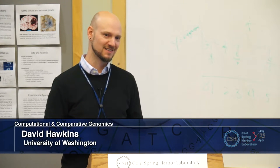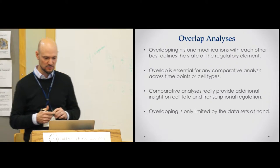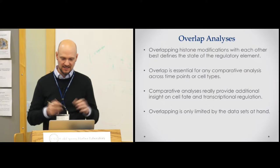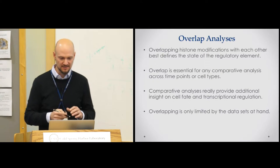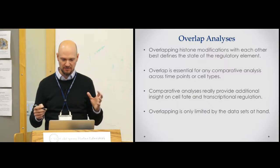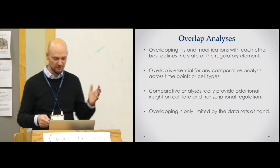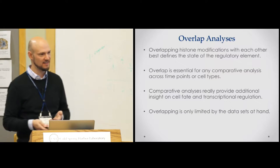What I found most remarkable was that just based on our motif analysis, we could show that the transcription factor was binding the site. We did DAPA assays to ask if the transcription factor binds based on the prediction and whether it was disrupted by the SNP — showing several examples where a single SNP does actually disrupt transcription factor binding. Focusing your motif analysis to get the best candidates for binding really pays off. In summary: overlapping histone modifications with each other best defines the regulatory state, and is essential for comparative analyses across time points or cell types, providing insight into cell fate and transcriptional regulation.